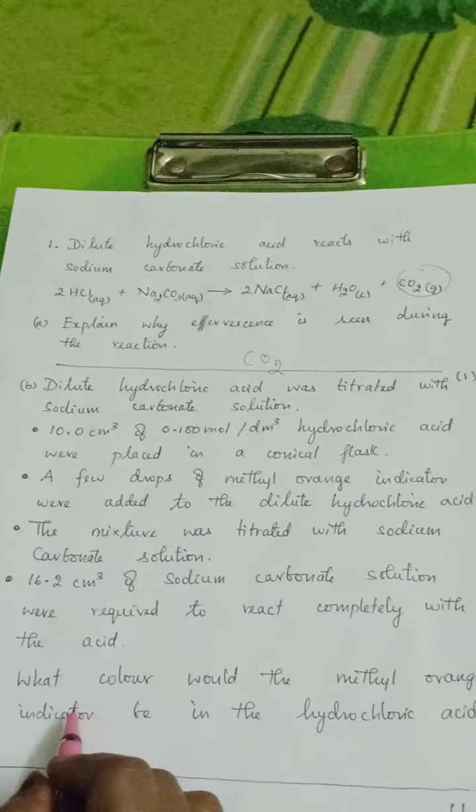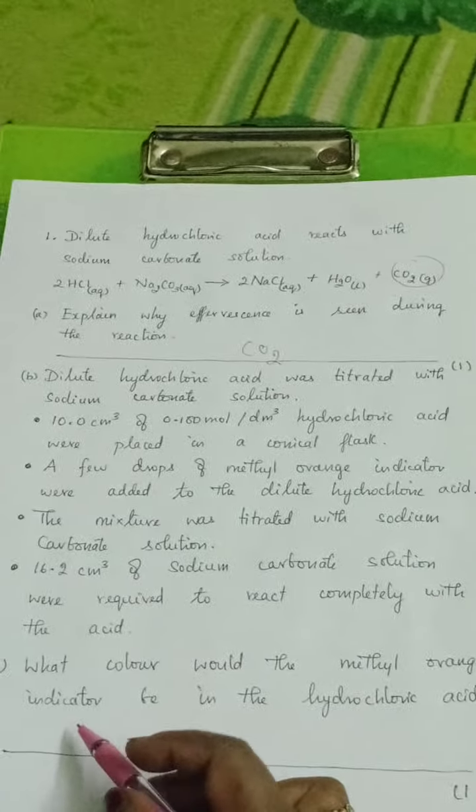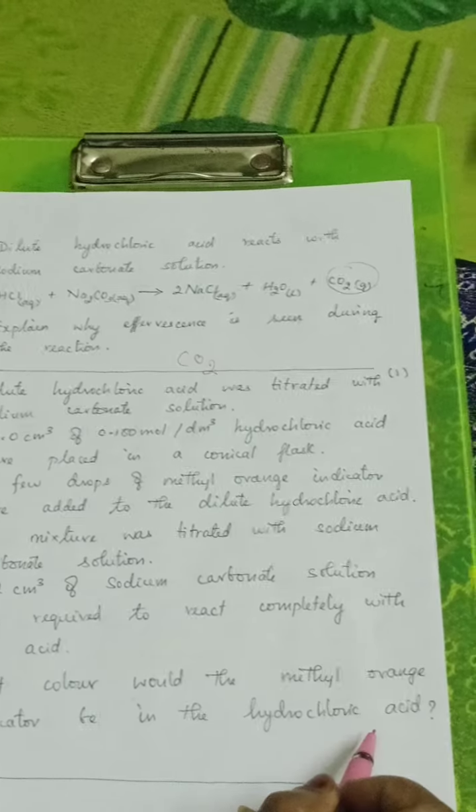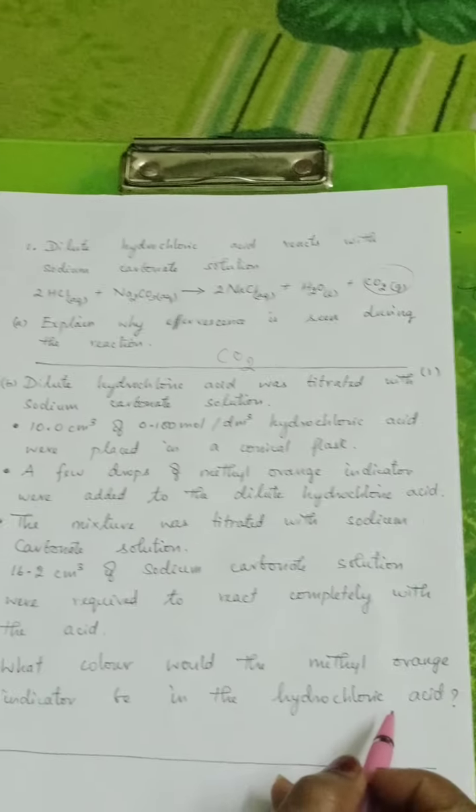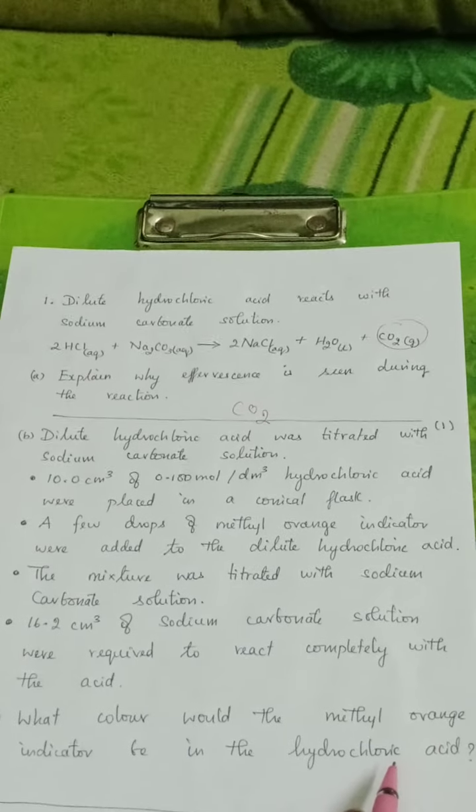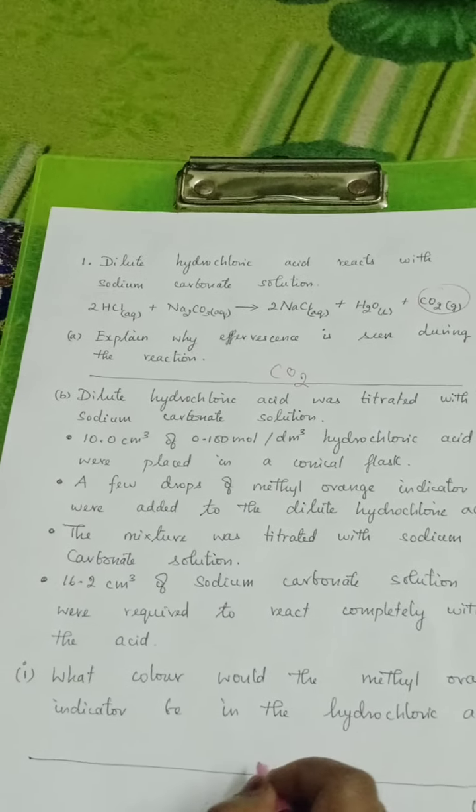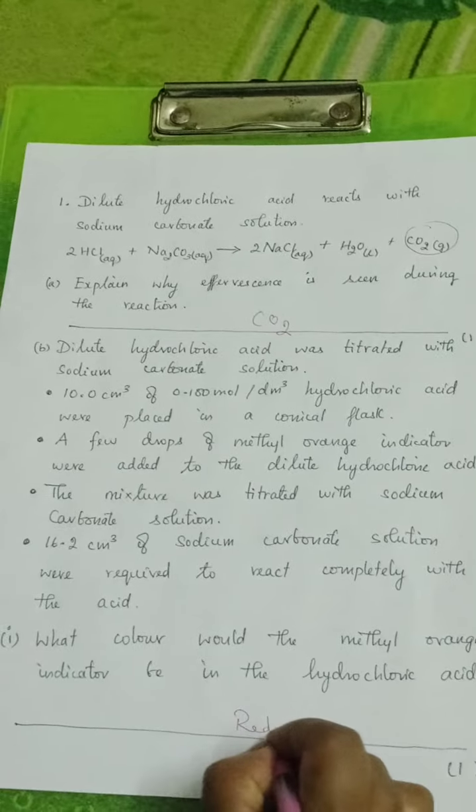The question is: what color would the methyl orange indicator be in hydrochloric acid? Methyl orange is basically orange color, but with hydrochloric acid it turns red.